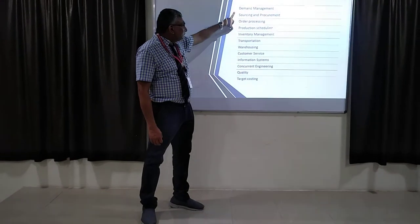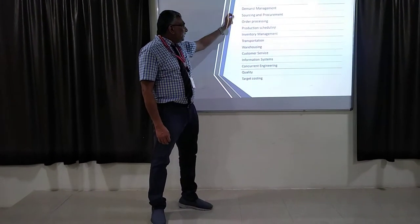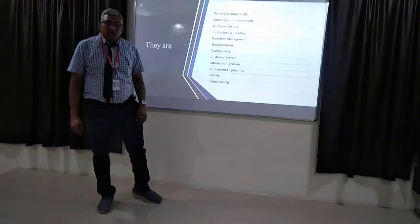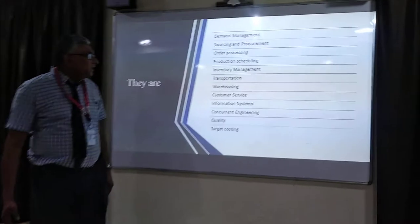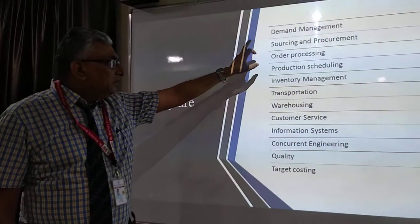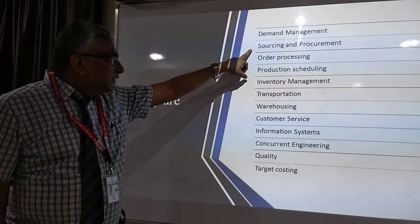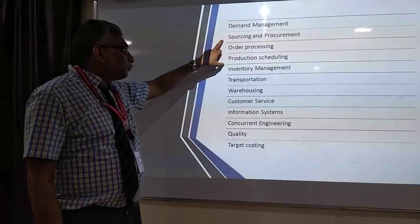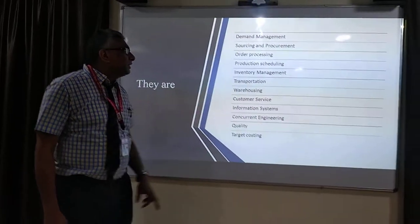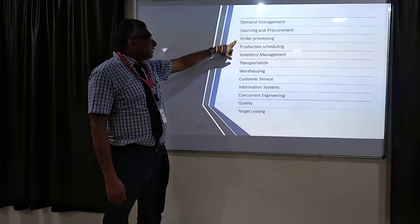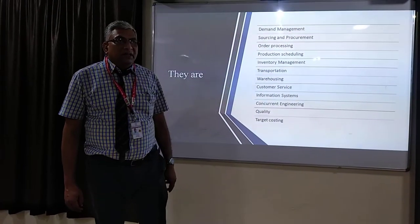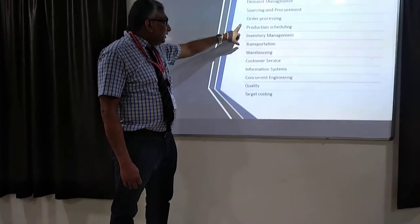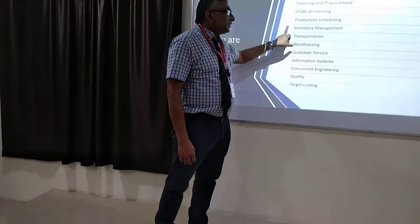Based on the demand, production has to take the entire process starting from sourcing and procurement. We have to align the process in production, and for that we require raw materials — that is called sourcing. Sourcing and procurement start with demand management, then after that we have to make the material available, which is called order processing, and based on the demand we make the schedule — that is called production.